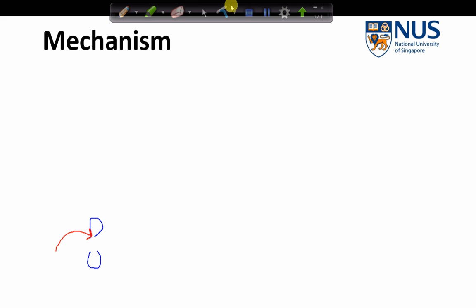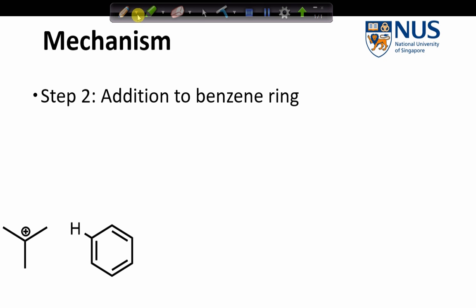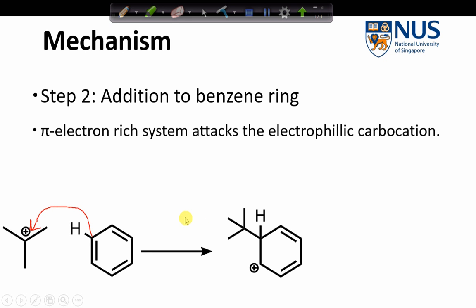So now that we have our electrophile, which is our carbocation that we just formed, the next step is substitution onto the benzene ring. So remember that I said before, benzene rings are electron rich due to the delocalized π electrons in the ring. Therefore, the electrons are attracted to the electrophile, and we get a nucleophilic attack like so.